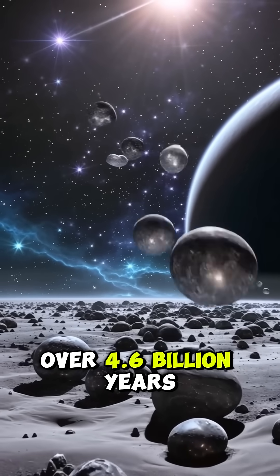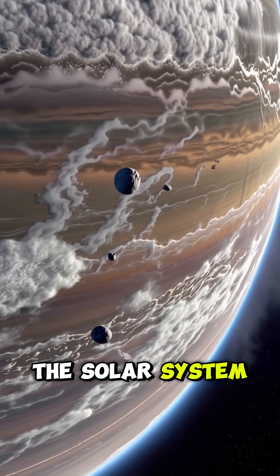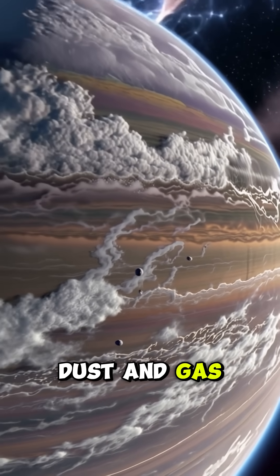Over 4.6 billion years ago, the solar system was forming. Planets grew from dust and gas.